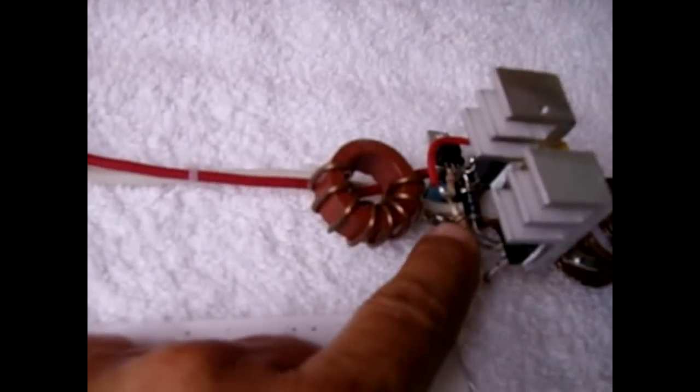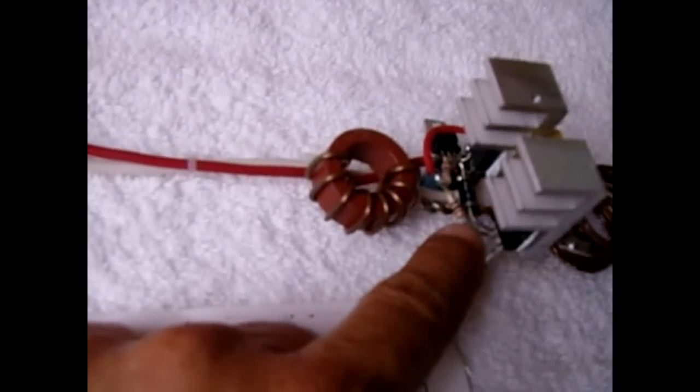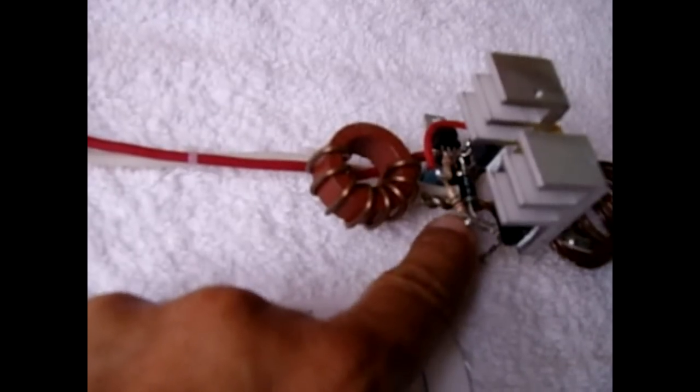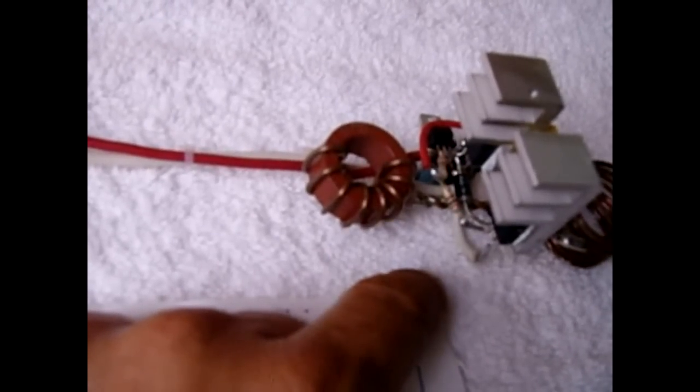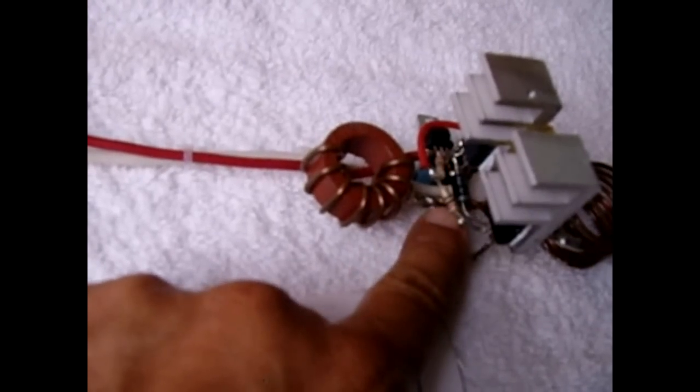You will use two half watt 200 ohm resistors. You're going to use a 1N5819 or higher. Those are the Schottky diodes.